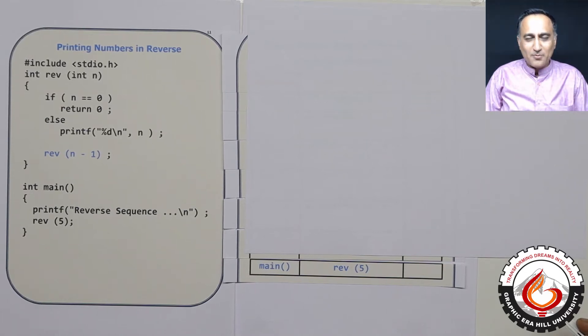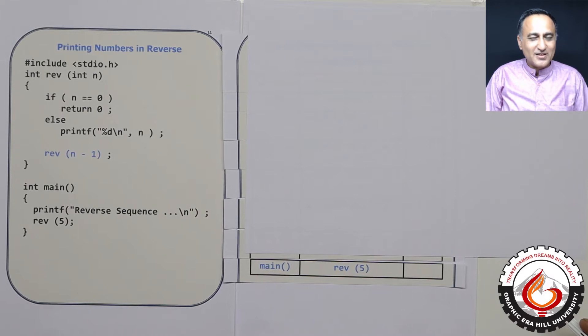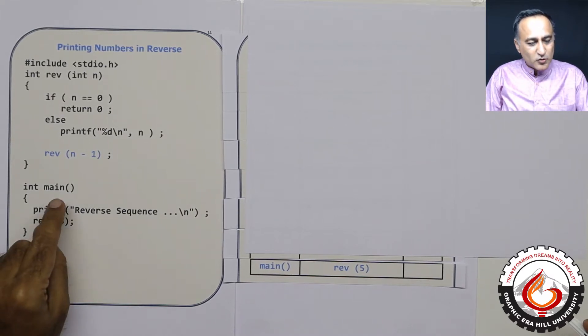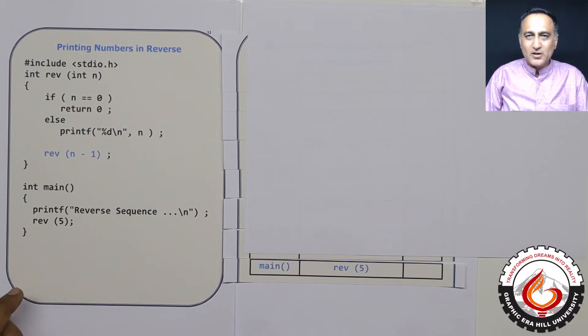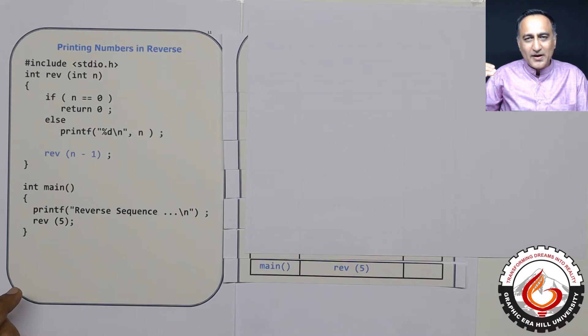In this program, I am going to show you using recursion how you can print numbers in reverse. It's really simple. So in main, I am calling the function reverse with the value 5. So it should print natural numbers 5, 4, 3, 2 and 1.